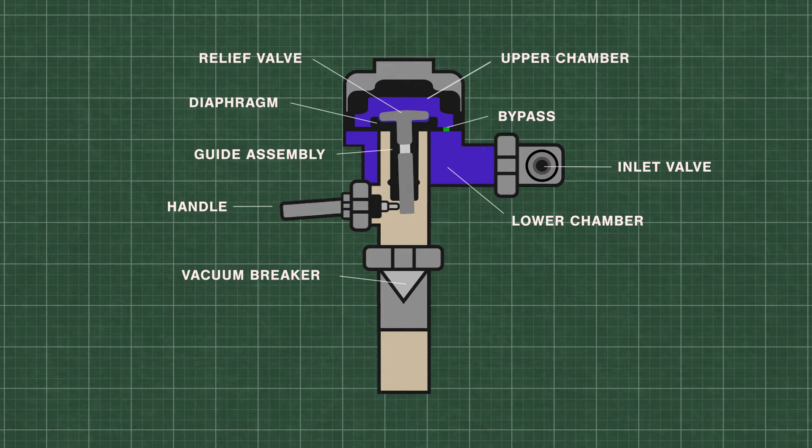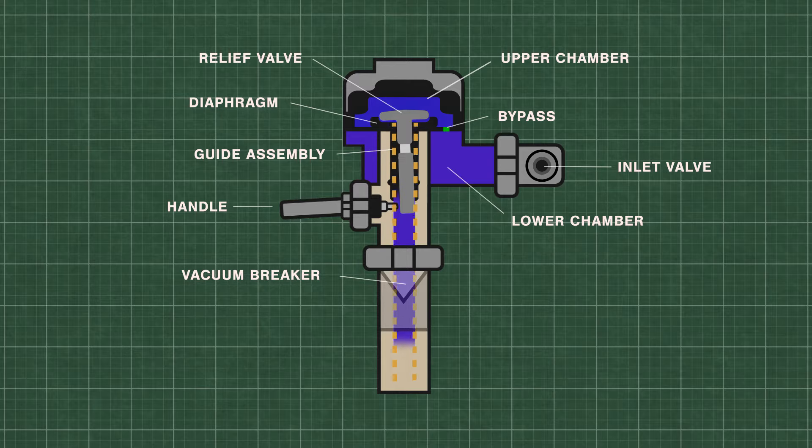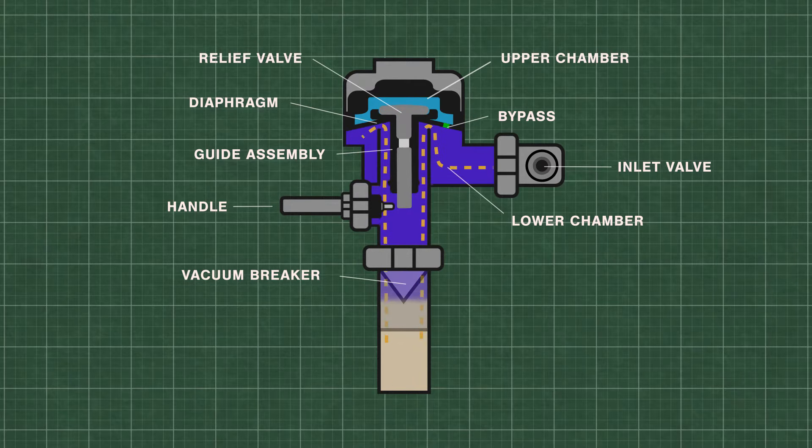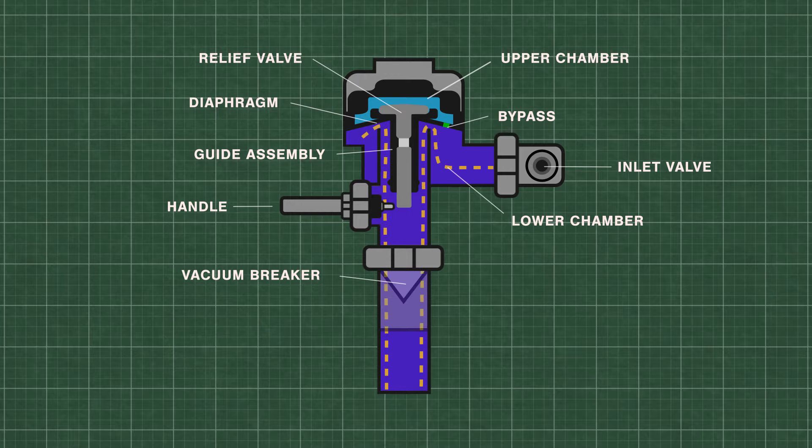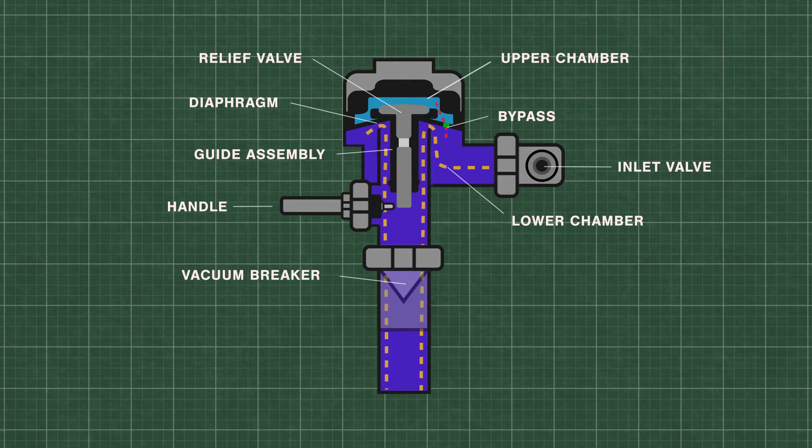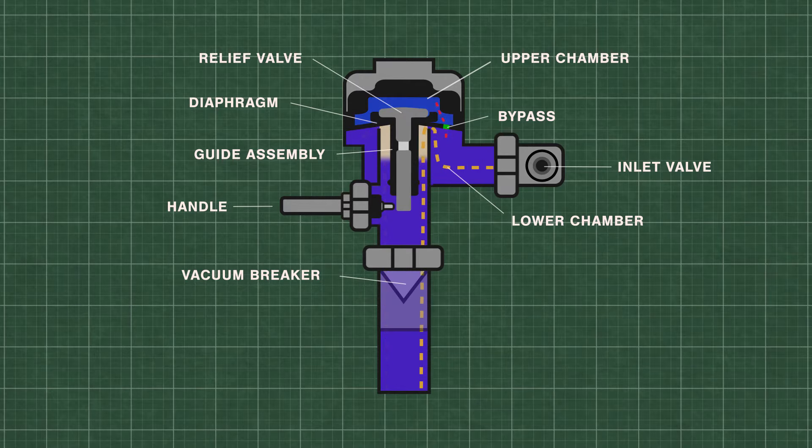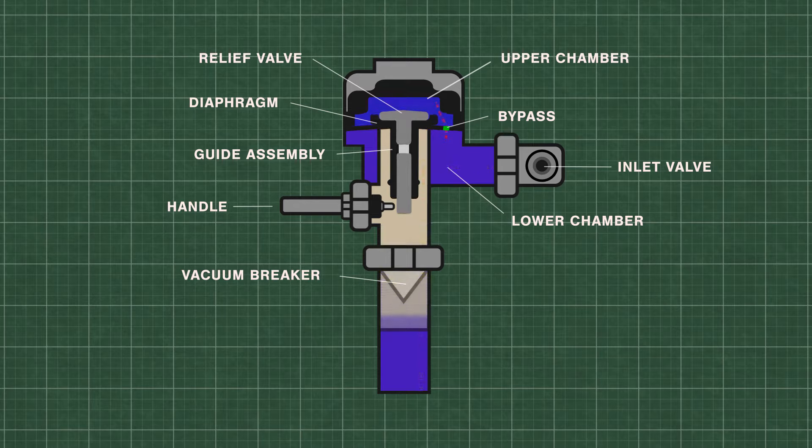When the handle is pressed, the relief valve opens and releases water from the upper chamber, which decreases the pressure. High pressure water from the inlet now lifts the diaphragm up and travels down the flush pipe. During the flush, some of the water is forced back into the upper chamber through a small bypass hole in the diaphragm. The flush continues until the pressure equalizes and pushes the diaphragm down onto the valve seat.